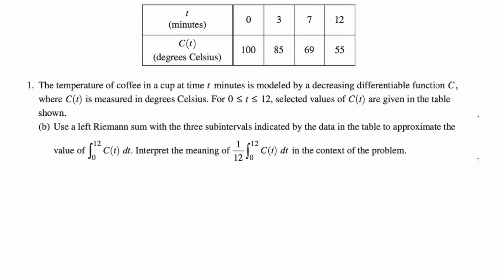So anytime you see something like 1 over 12, the integral of 0 to 12, that's going to be the average value of that function. So the function is temperature of coffee in a cup. So it's going to be the average temperature of the coffee in the cup. That's going to be our context. But we'll get to that. Let's first do this left Riemann sum.